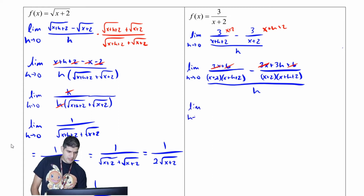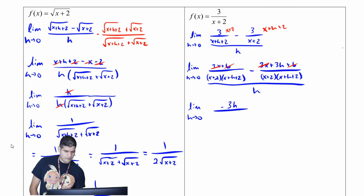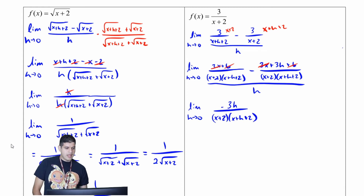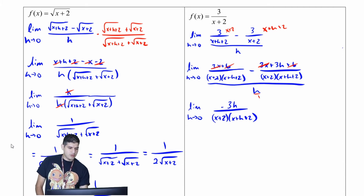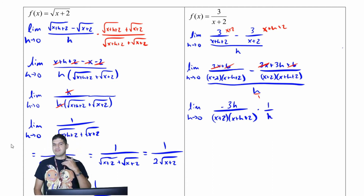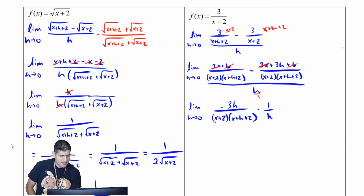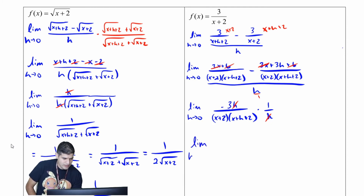What I have left is the limit as h approaches zero of negative three h over x plus two times x plus h plus two, divided by h over one. I multiply by the reciprocal one over h, and the h's divide out, leaving the limit as h approaches zero of negative three over x plus two times x plus h plus two.